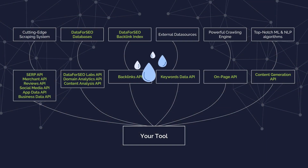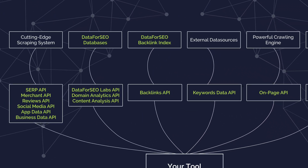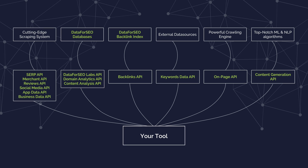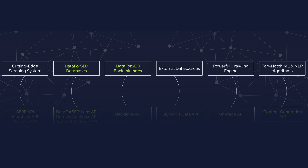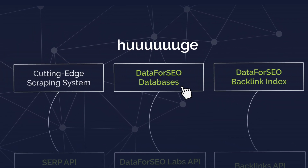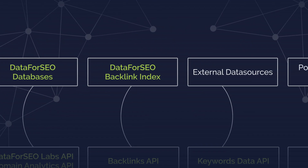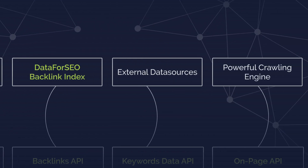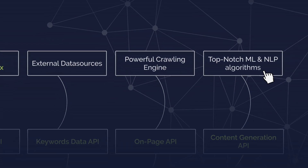Think of Data4SEO as a big system of rivers and reservoirs that contain rich SEO data and make it easily accessible. At its core, Data4SEO uses several powerful technologies, like underground reservoirs, which include a cutting-edge scraping system, huge databases, a massive backlink index, quality external data sources, a high-performance crawling engine, and top-notch NLP and true machine learning algorithms.